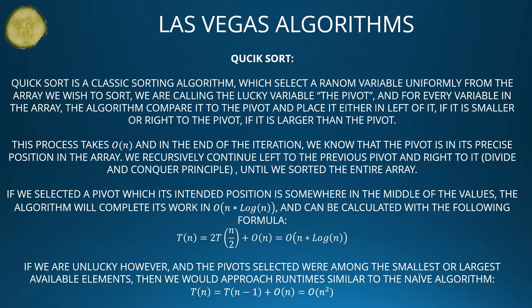Las Vegas algorithms — quicksort. Quicksort is a classic sorting algorithm which selects a random variable uniformly from the array we wish to sort. We call the lucky variable the pivot. For every variable in the array, the algorithm compares it to the pivot and places it either to the left if it is smaller, or to the right if it is larger than the pivot. This process takes O(N), and at the end of the iteration we know that the pivot is in its precise position in the array. We recursively continue left and right of the previous pivot — divide and conquer — until we have sorted the entire array.